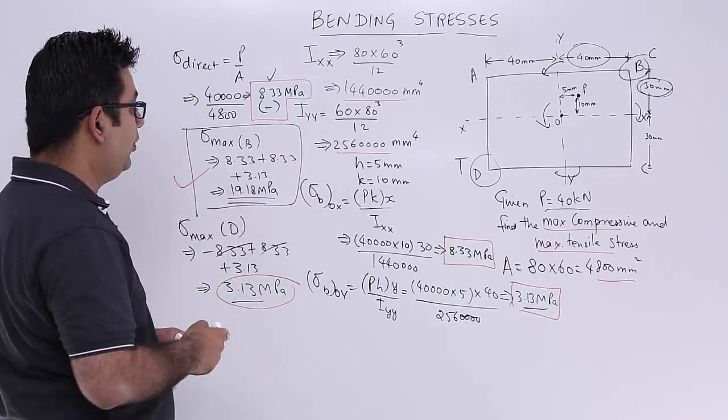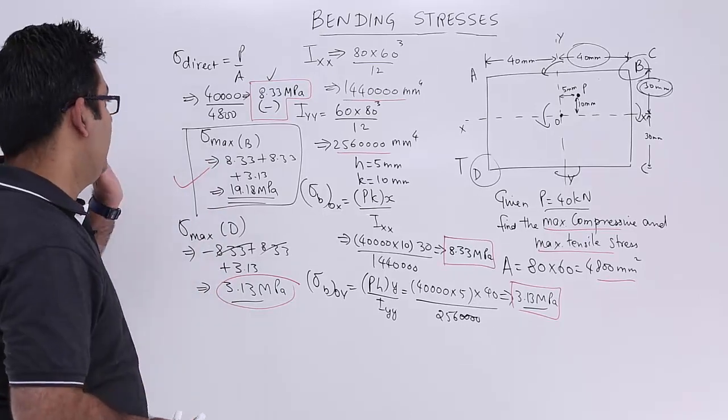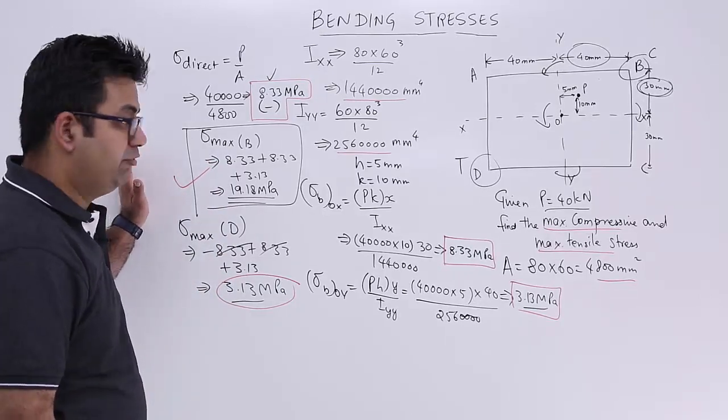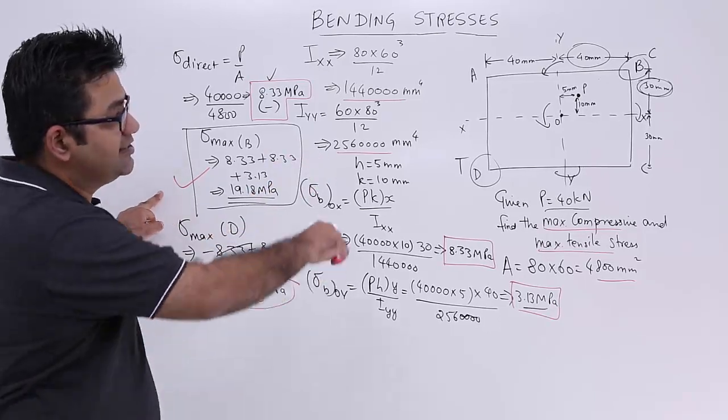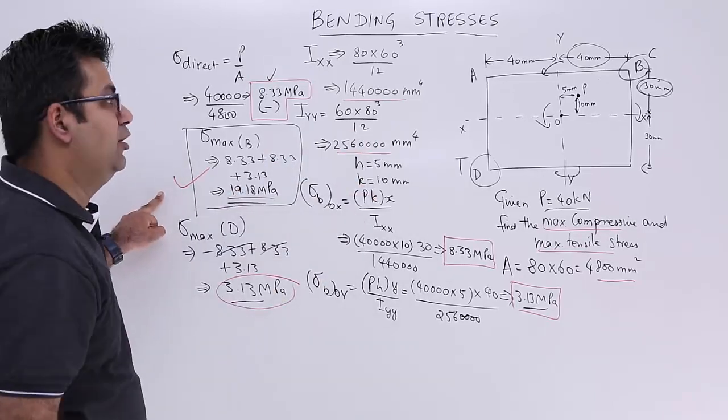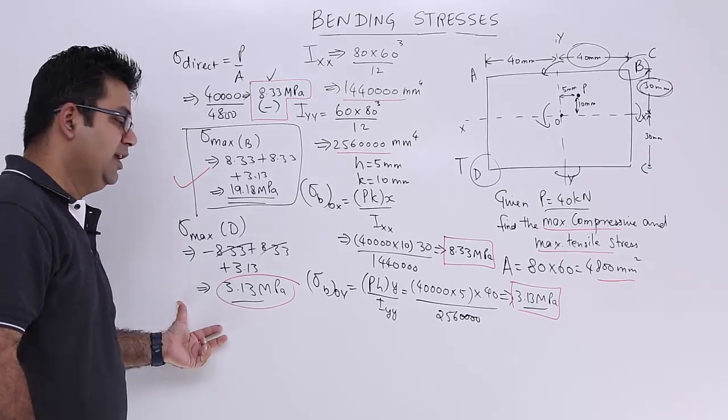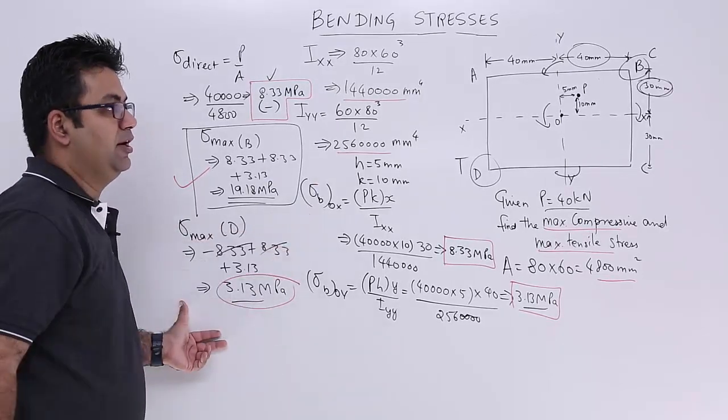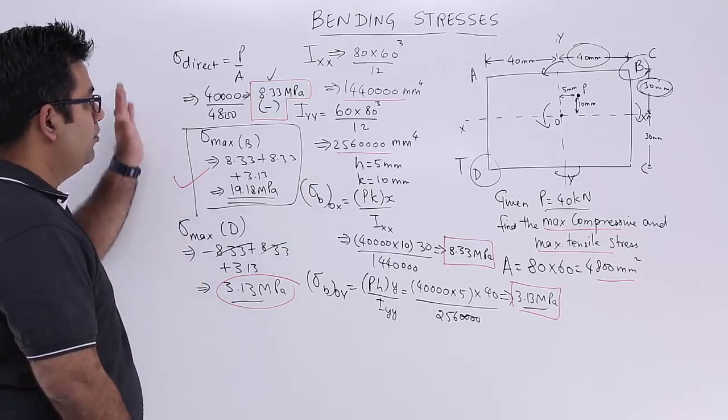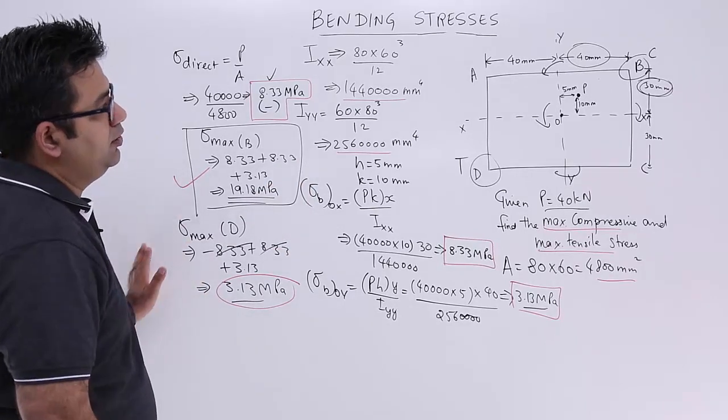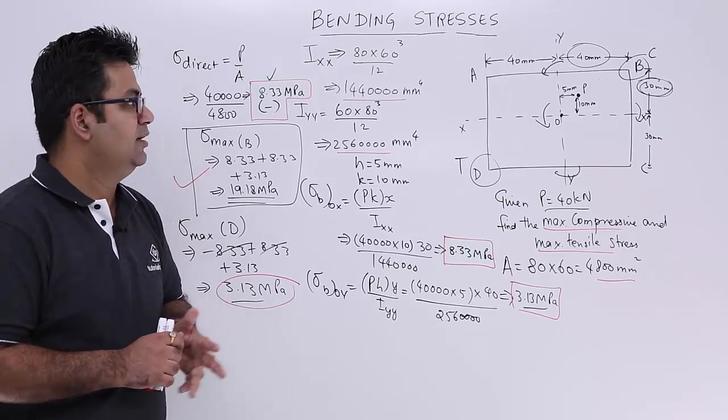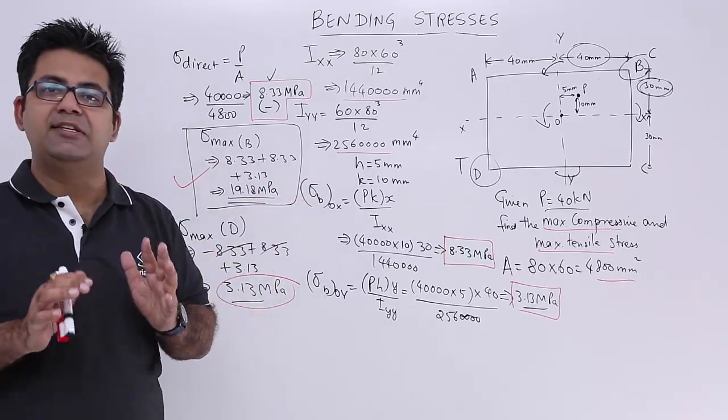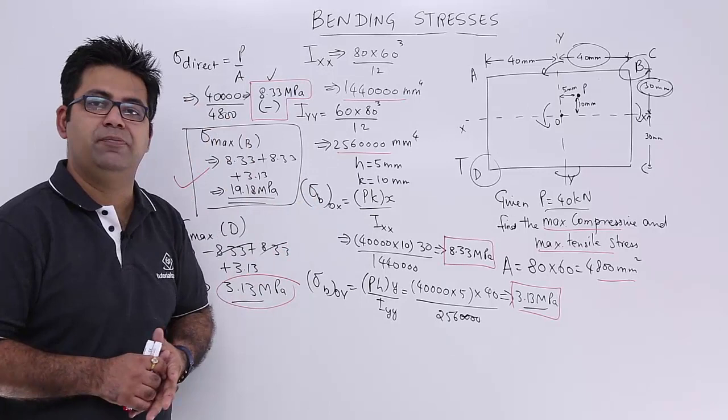You have 19.18 MPa, which is the maximum value of stress produced in this section. It is in the same quadrant as that of the load. And you have the minimum stress in the opposite quadrant as that of the load. So this is how you attempt a question on such a condition. So I hope you understood the entire video and the entire chapter on the bending stresses in beams.